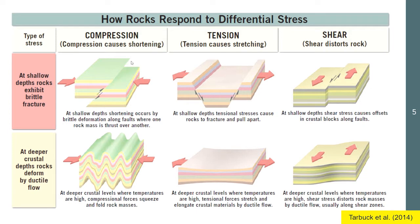If compression happens at deeper depths into the Earth's surface, it will cause a different reaction. At deeper crustal levels where temperatures are high, compressional forces squeeze and fold the rock mass — there is still shortening, but instead of one rock mass being displaced on top of the other, it causes folding of the rock masses. That's compression: the squeezing together of rock masses.